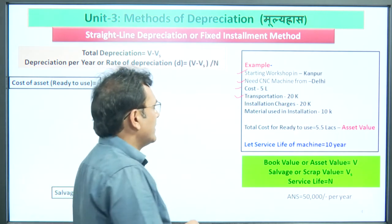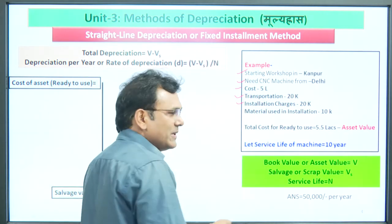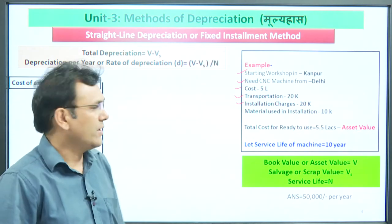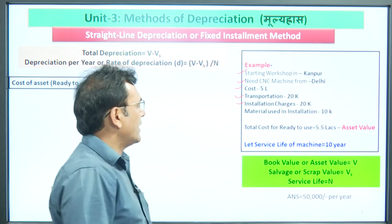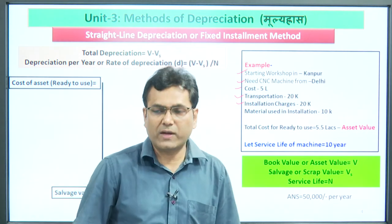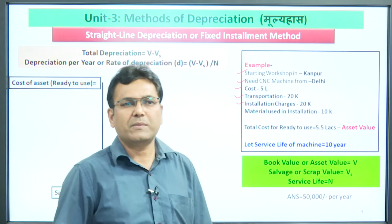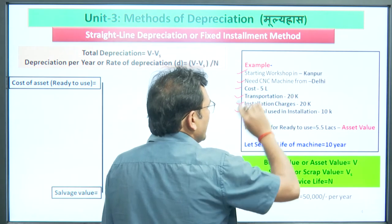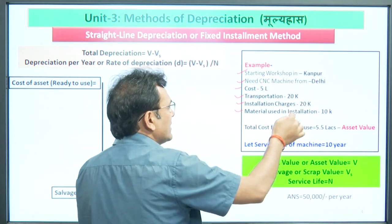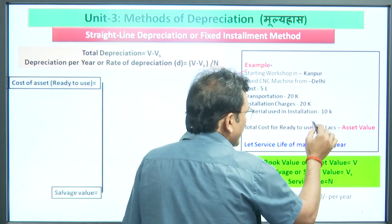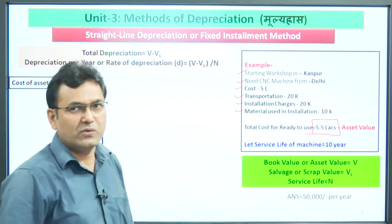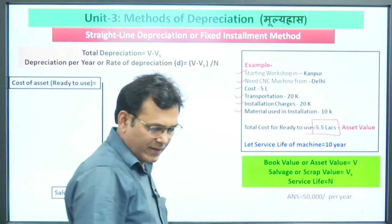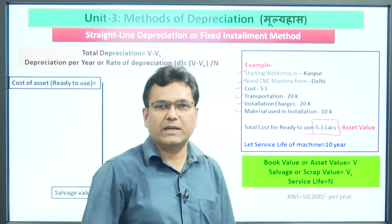Additionally, certain foundation work and materials were needed for installation, costing 10,000 rupees. Adding initial cost, transportation, installation, and other materials together, the total investment came to 5.5 lakh rupees. This is the asset value. In technical economics, we know this as the book value — it represents the total cost until the asset is ready to use.